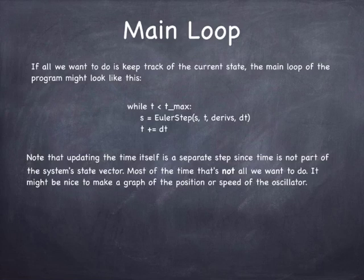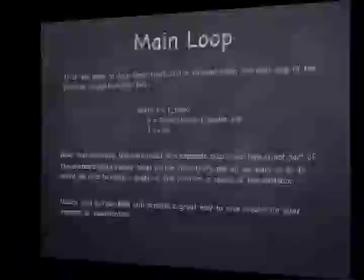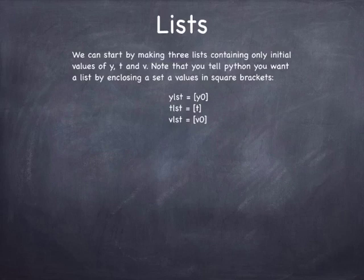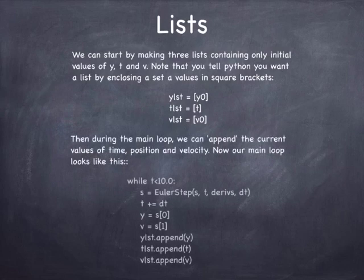Finally, if we want to make a graph of position or speed as a function of time, we can still use Python lists to save results of the integration to make a graph or something for visualization later. If we want to keep track of the position and the time and the velocity, we can start with a list that just has the initial values. And then in the loop, we can use the append method of those lists to throw in the new values of y, v, and t. It's convenient to pluck out of the state the current values of y and v.